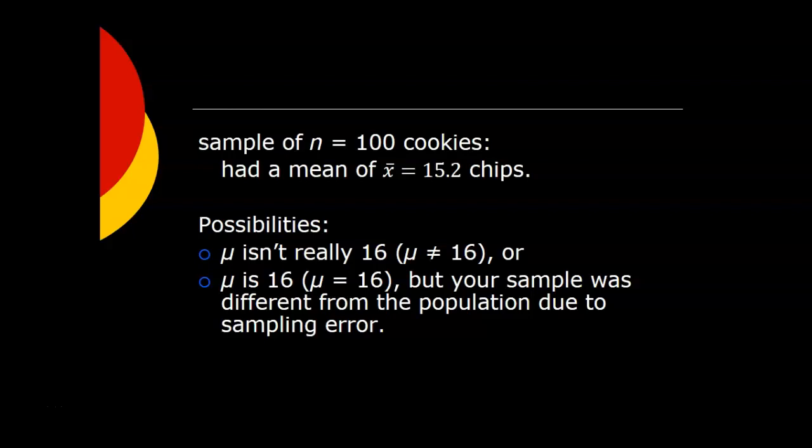So that means one of two things. It might mean that the population mean, the average for all of their cookies, isn't really 16, that they were lying or at least incorrect when they said the average was 16. But the other possibility is that mu really is 16, but your sample was different from the whole population due to sampling error, which just means that because of individual variation from cookie to cookie, what you saw in your sample was just a little different from what you would see if you could look at the whole population, if you could actually count the number of chocolate chips in every single one of the cookies they make.